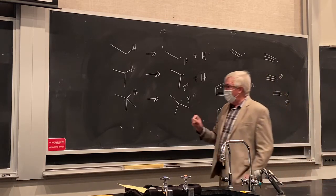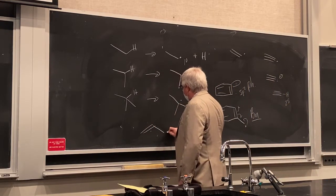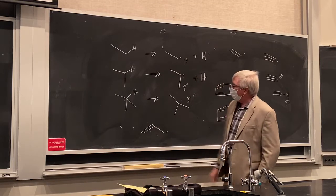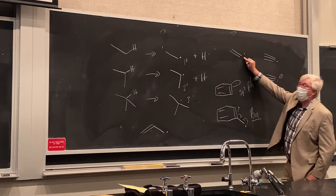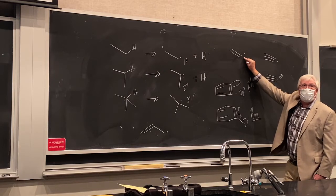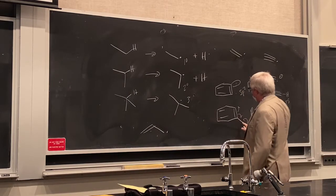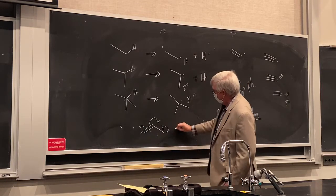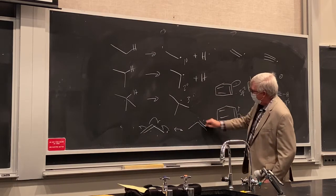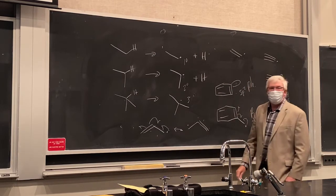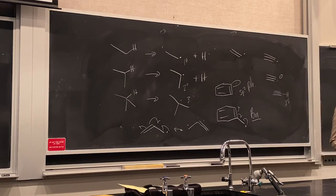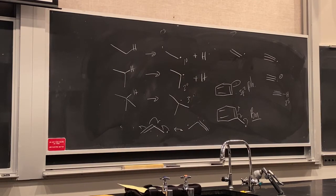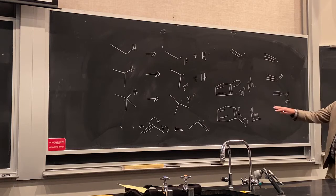The other similar case is allyl. If we have a carbon adjacent to the alkene, that allylic C-H is also easier to break — just like benzylic — because of resonance. Let's draw the resonance structure for an allyl radical. So a lot of what we learn moving forward is that the structure of these intermediates can be stabilizing or destabilizing, and that affects the rates and equilibrium.